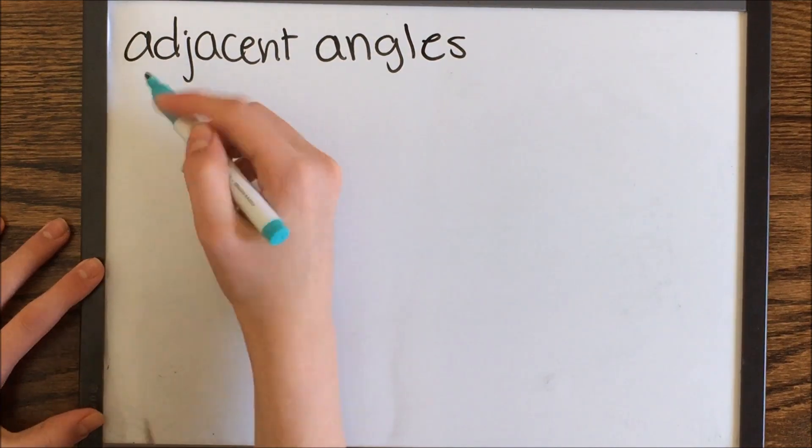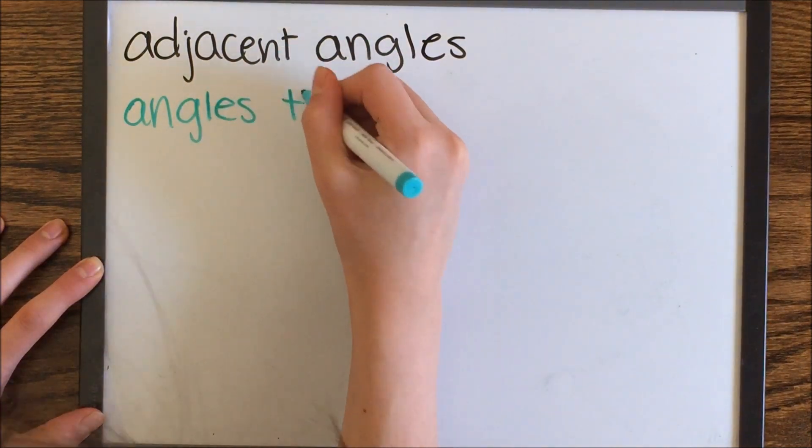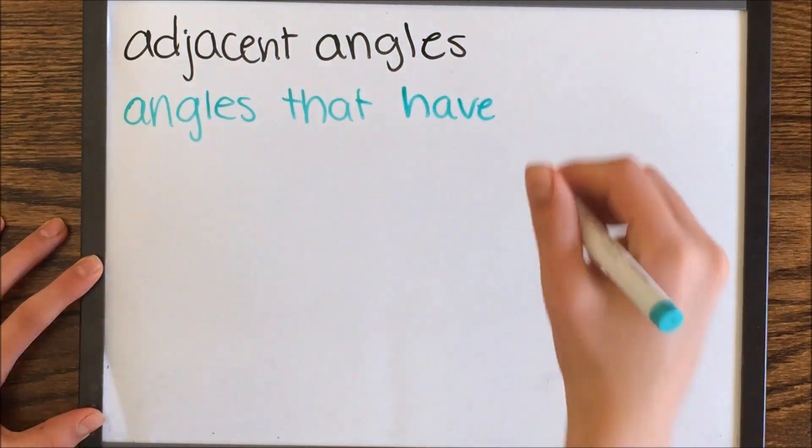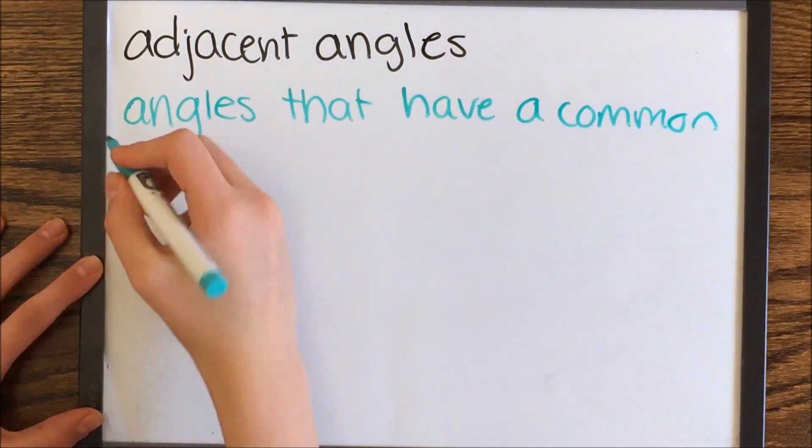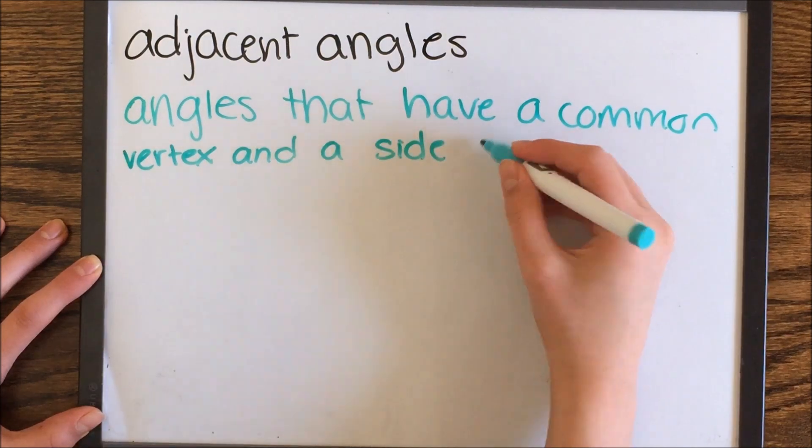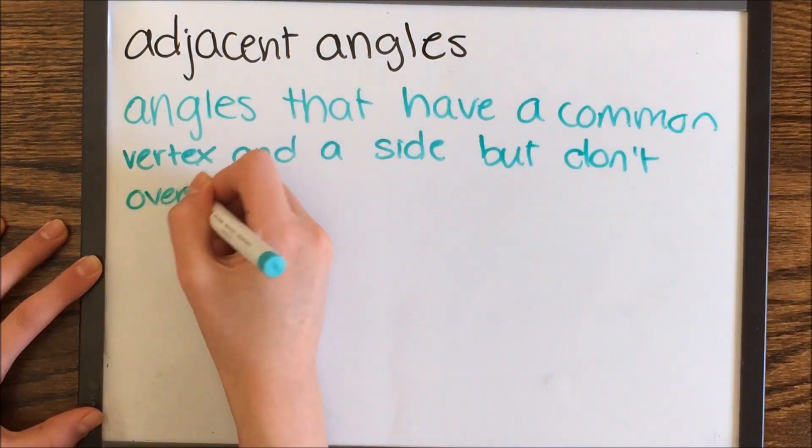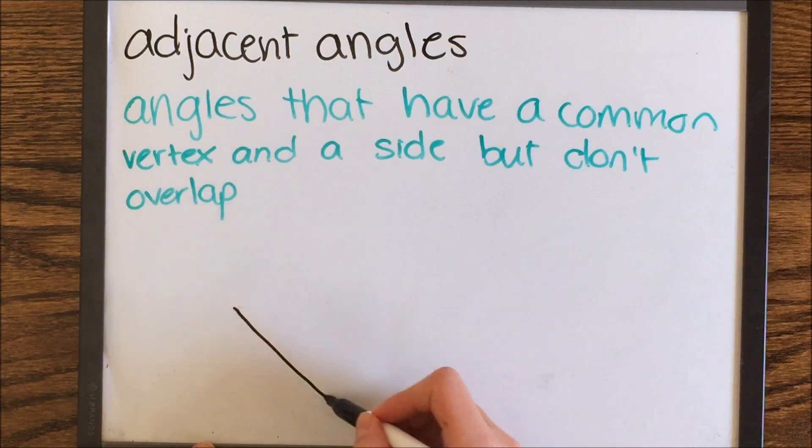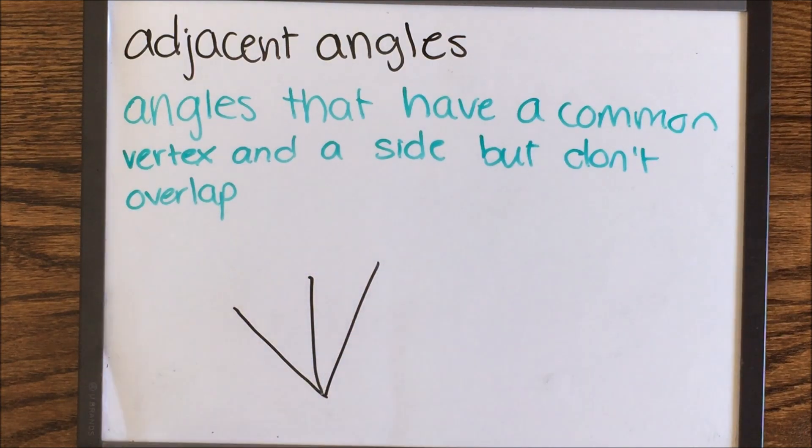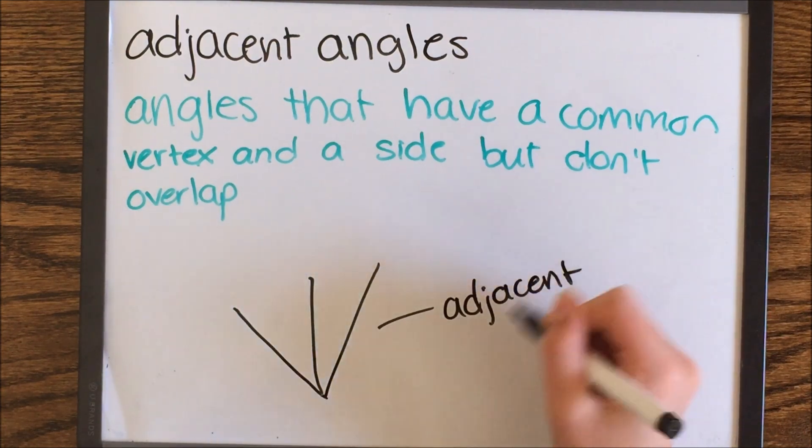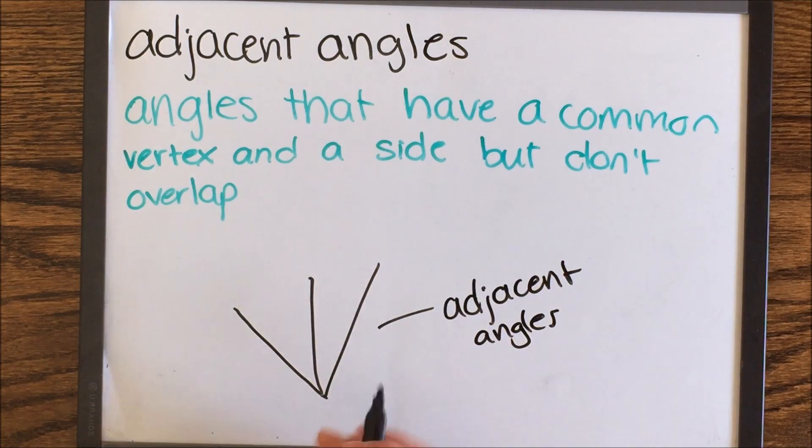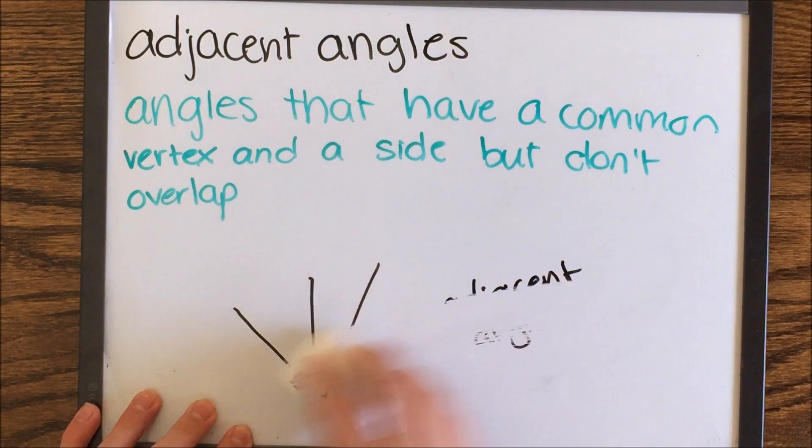Adjacent angles are angles that share a vertex and one side, but they don't overlap. This is just a picture to show you what an adjacent angle is. Here are two angles and they share one side.